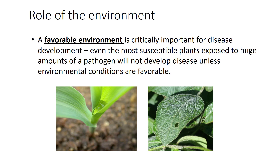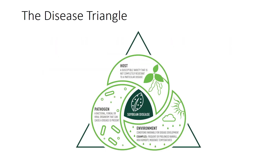Moreover, such factors as compaction, tillage practices, planting depth, seedbed preparation, and residue management can have significant effects on disease development. The disease triangle is an important concept in plant pathology. Disease will only occur if three factors interact simultaneously. A susceptible host plant, a pathogen, and a favorable environment are the three factors composing the plant disease triangle. All three factors are necessary for development of a plant disease. Thus, disease can be affected by altering any of these three factors.